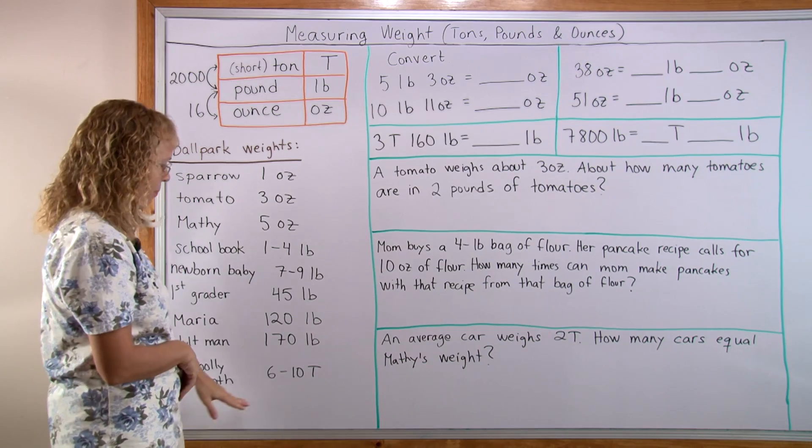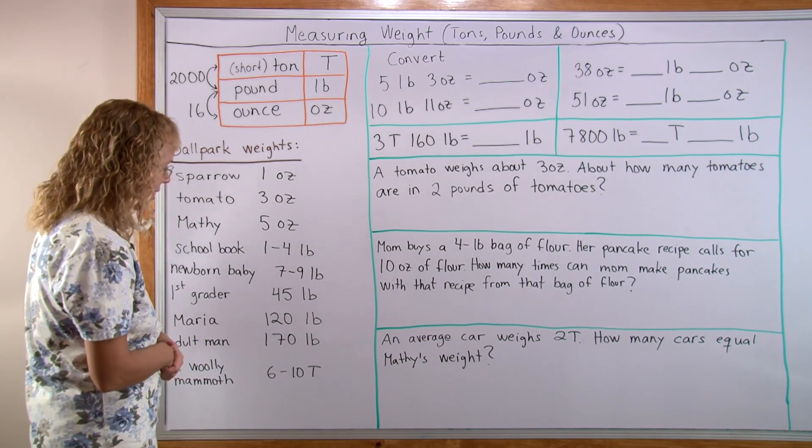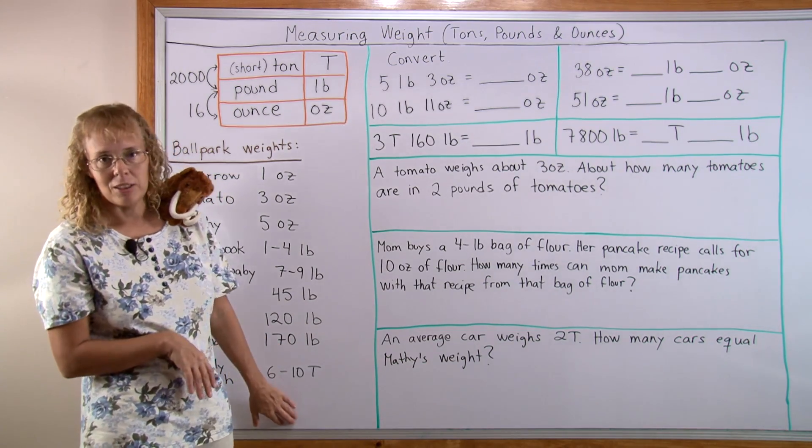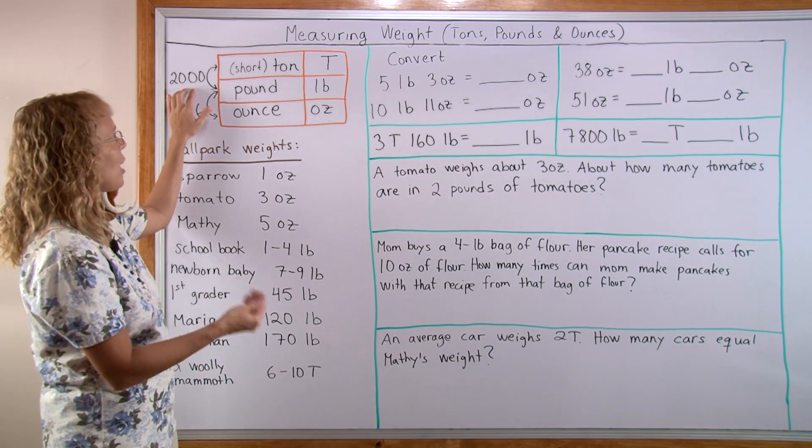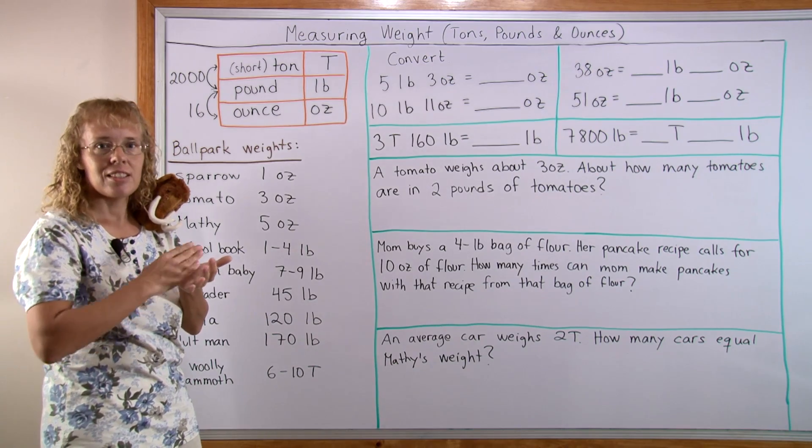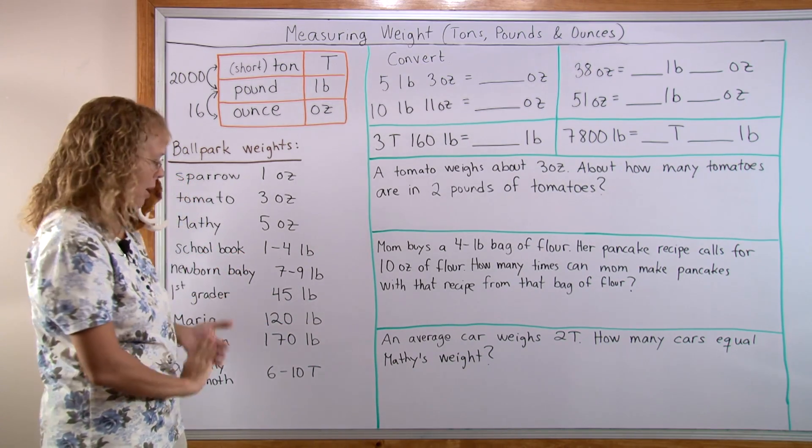A woolly mammoth: 6 to 10 tons. As Matthew said, he claims to weigh 7.5 tons. If we multiply that by 2,000, 7.5 times 2,000 becomes 15,000 pounds.